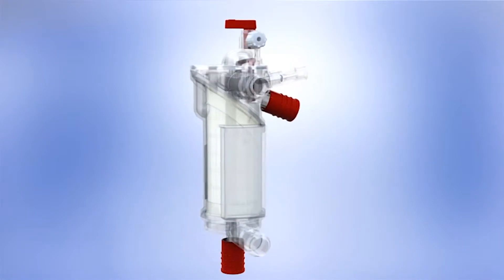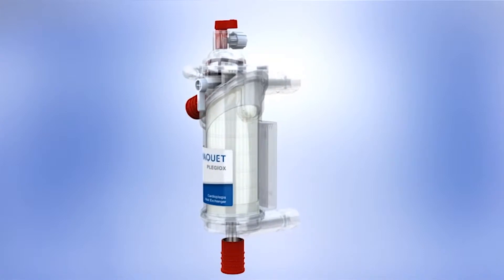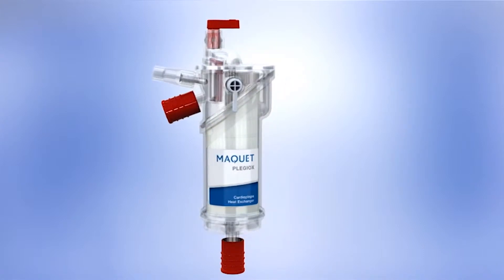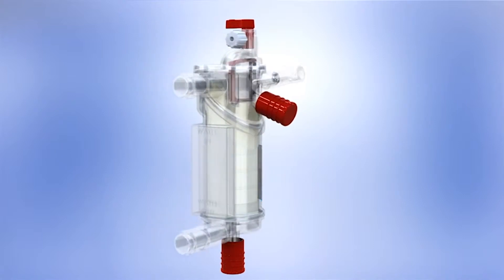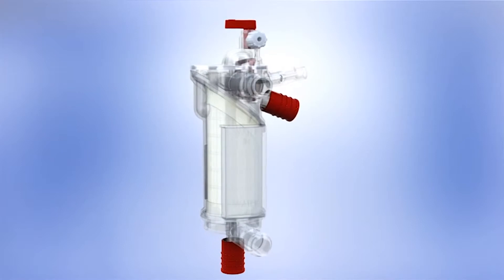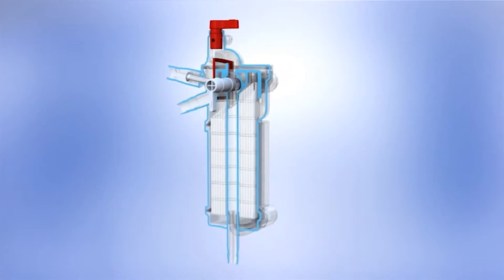Its compact, lightweight design with a fully visible flow path and high-performance heat exchanger fibres makes it the first choice for discerning perfusion teams. Its priming volume of only 31 milliliters contributes to a reduction in overall priming volume and the minimization of extracorporeal circuits.